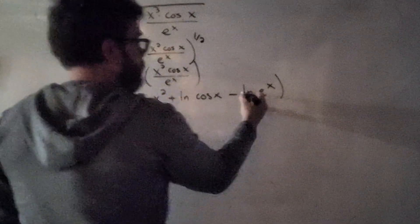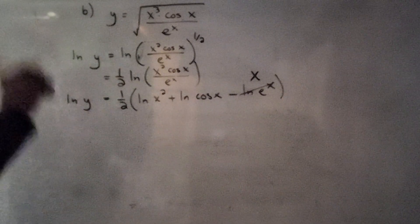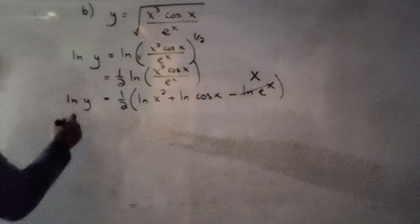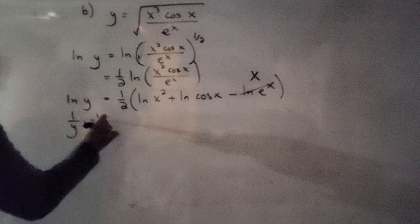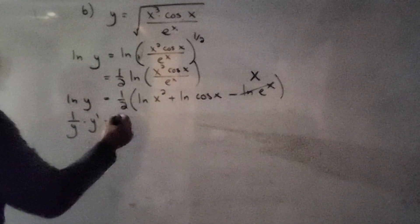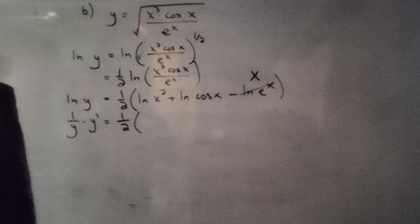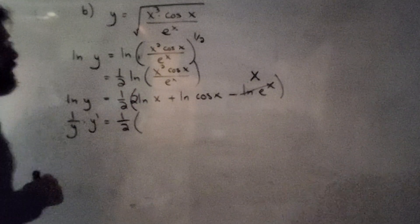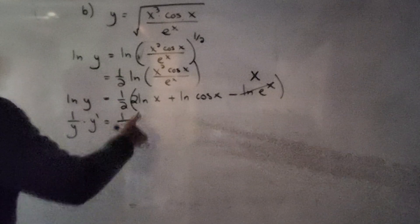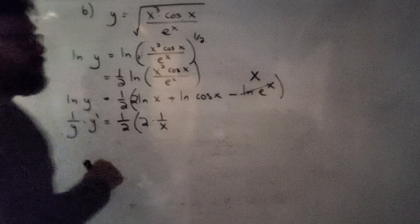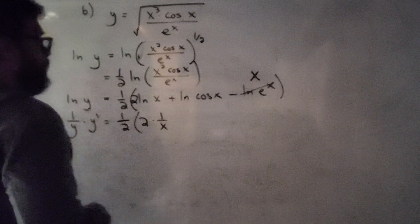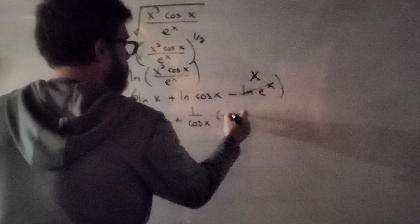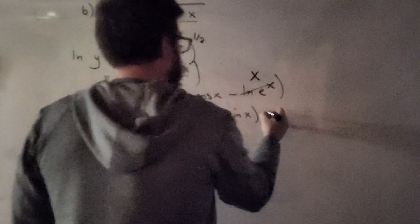Natural log of e to the x simplifies to just x. Now all the algebra is done, so we take the derivative. The left side gives 1 over y times y prime. On the right, the constant one-half stays out front. I'll also expand log of x squared as 2 times natural log of x, making the derivative 2 over x. Then the derivative of natural log of cosine of x is 1 over cosine of x times negative sine of x, and the derivative of negative x is negative 1.